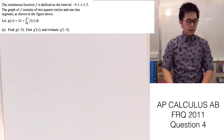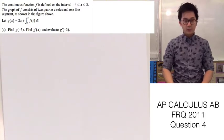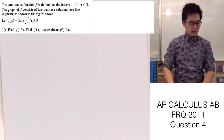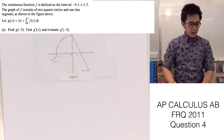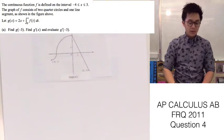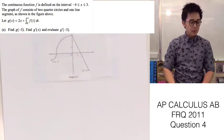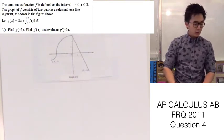Today we're going to be working on AP Calculus FRQ from 2011, question number 4. In this problem we are given the graph of f, and we are also given the function g of x which is equal to 2x plus the integral of f of t dt from 0 up until x.